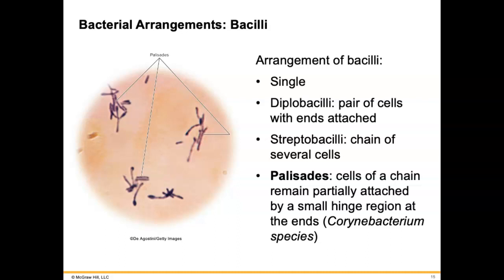For the arrangement of bacilli, we should also know palisades. When we talk about palisades, the cells of a chain remain partly attached — think of it like a hinge, closed over on itself. You can see how some are kind of next to each other, and sometimes they're still bent a little bit so the hinge isn't all the way closed. You should know what palisades means.